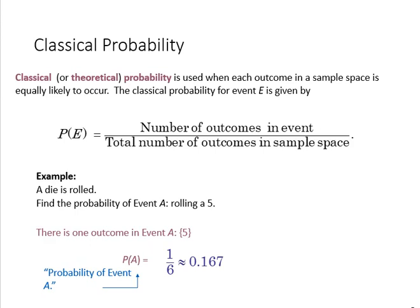Next, we can talk about classical probability, which is used when the outcome is equal, where it doesn't change. The probability of an event is, therefore, just simply the number of outcomes in an event, divided by the total number of outcomes in the sample space.